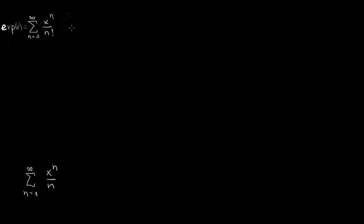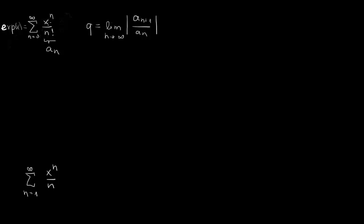Let's try to figure out what the radius of convergence is using the ratio test. How does the ratio test work? We have a ratio Q, and this Q can be calculated as the limit for n to infinity of the absolute value of a fraction: a_(n+1) over a_n. Now we need to plug in our terms and take the absolute value.